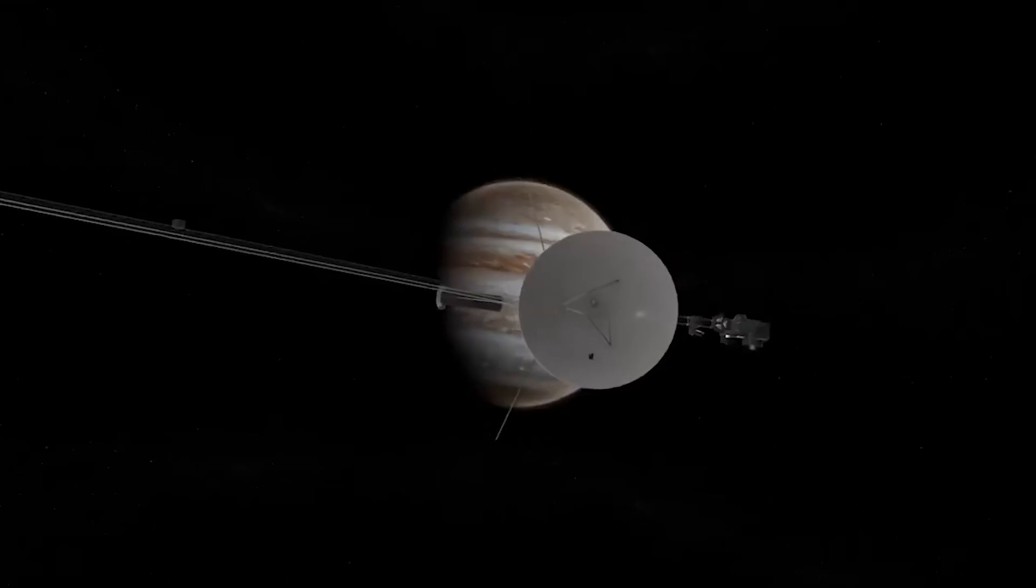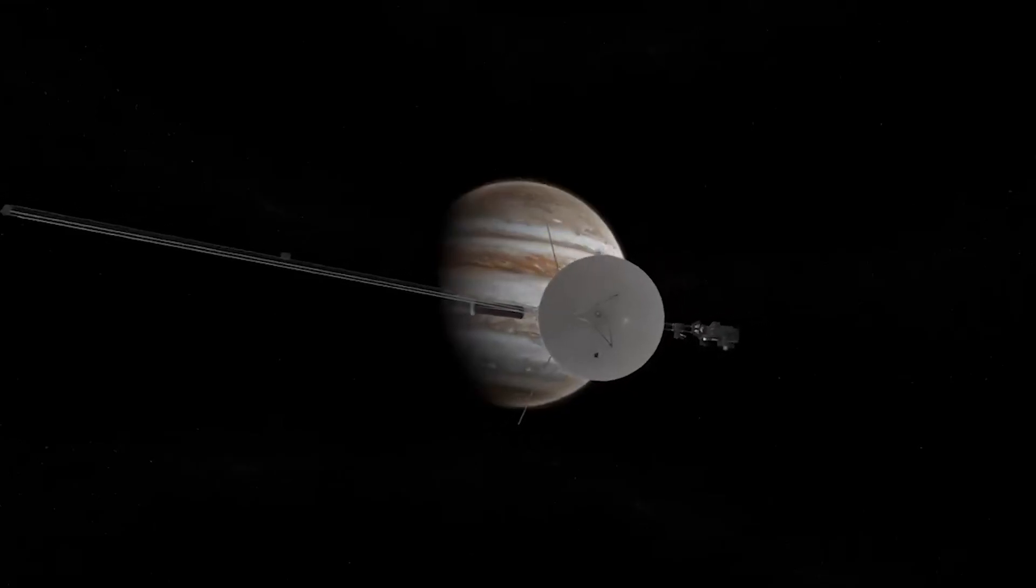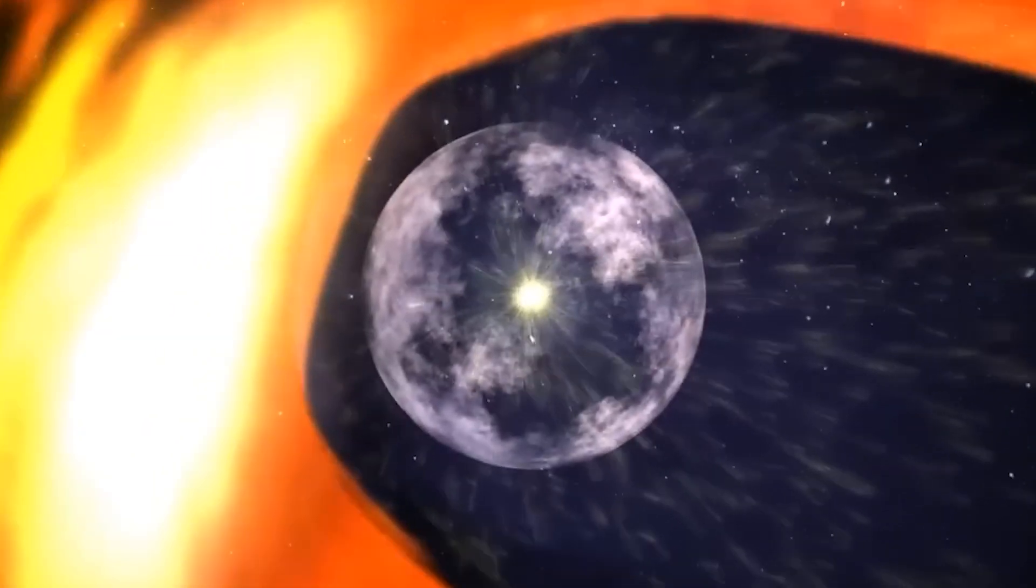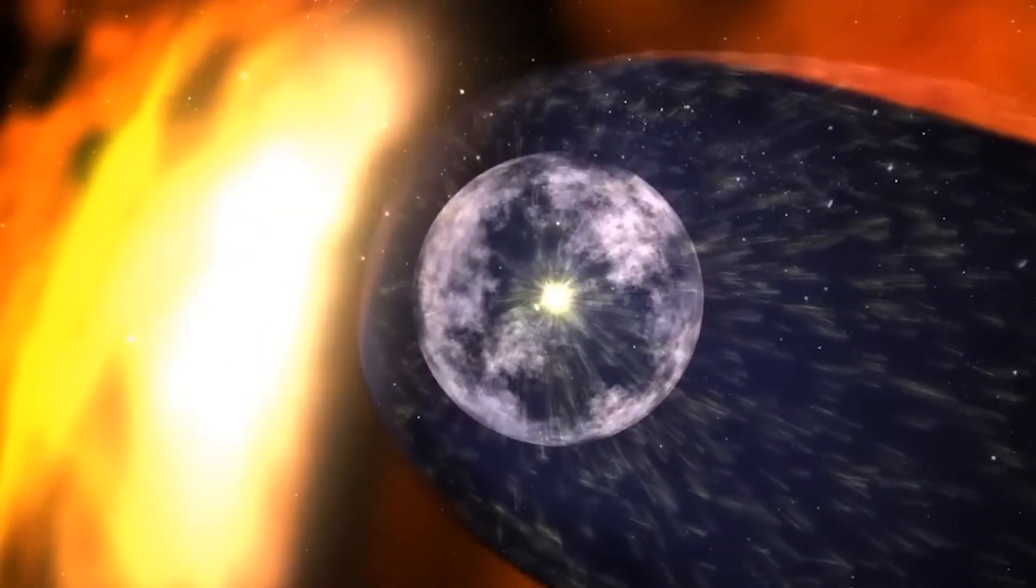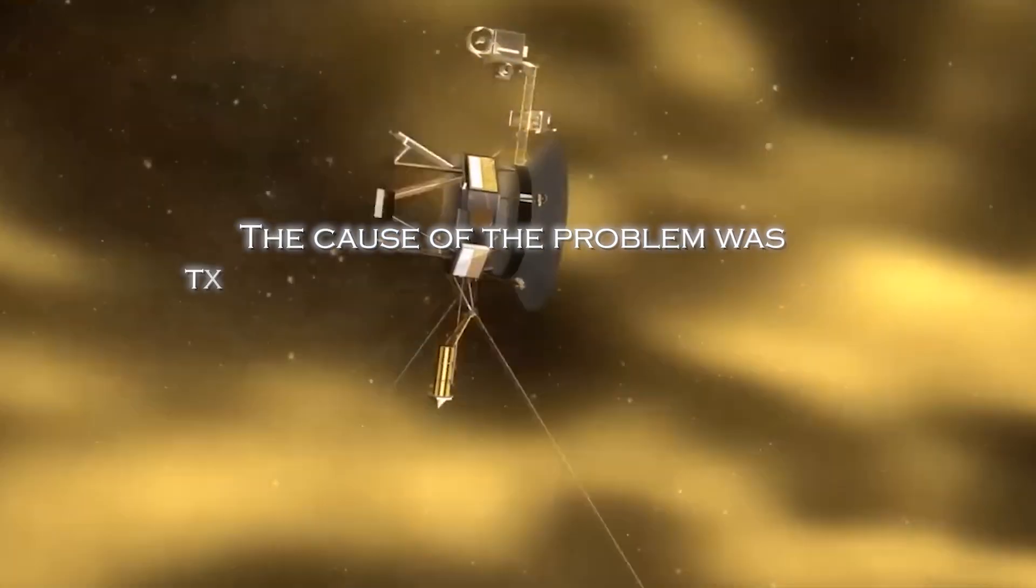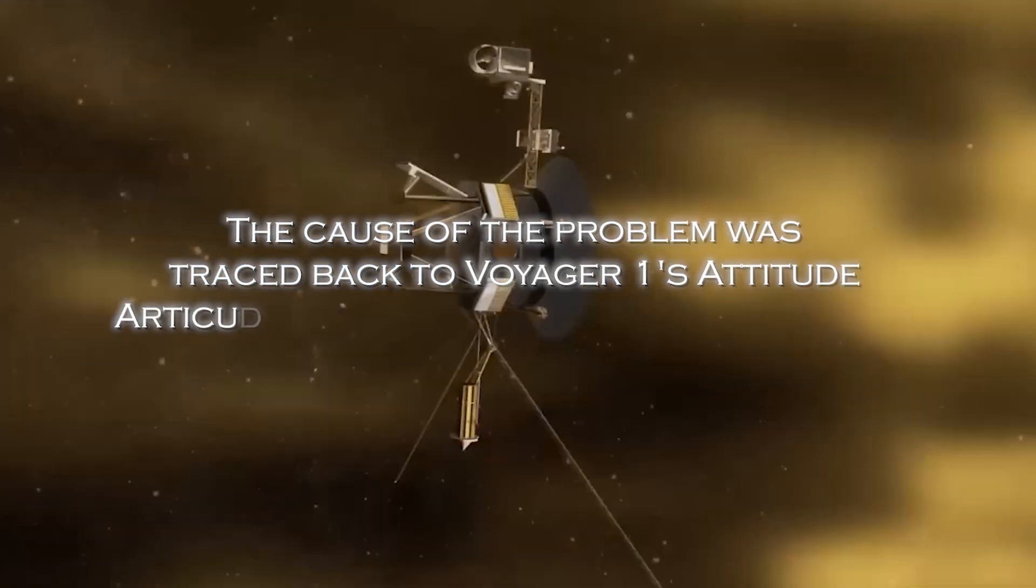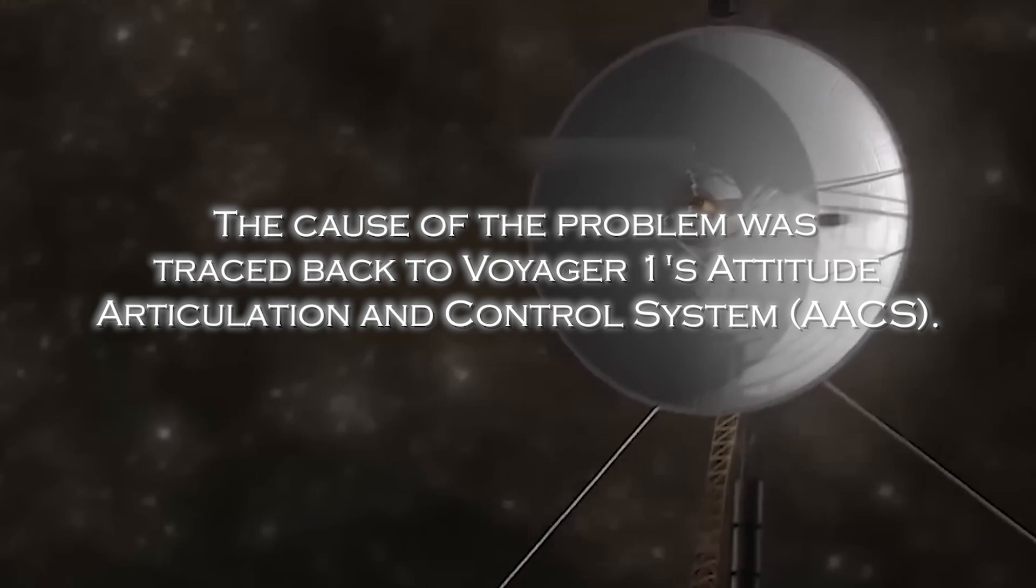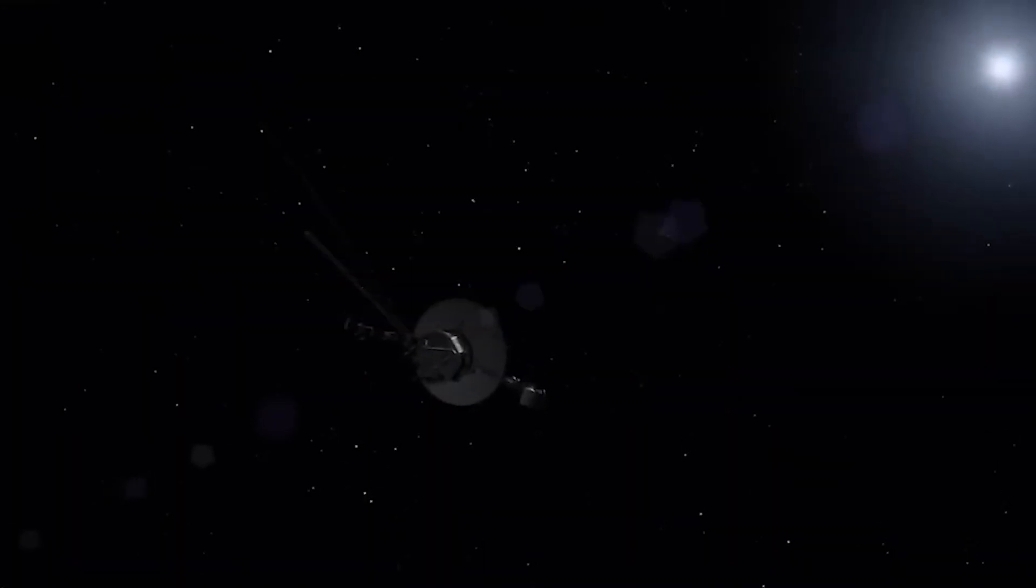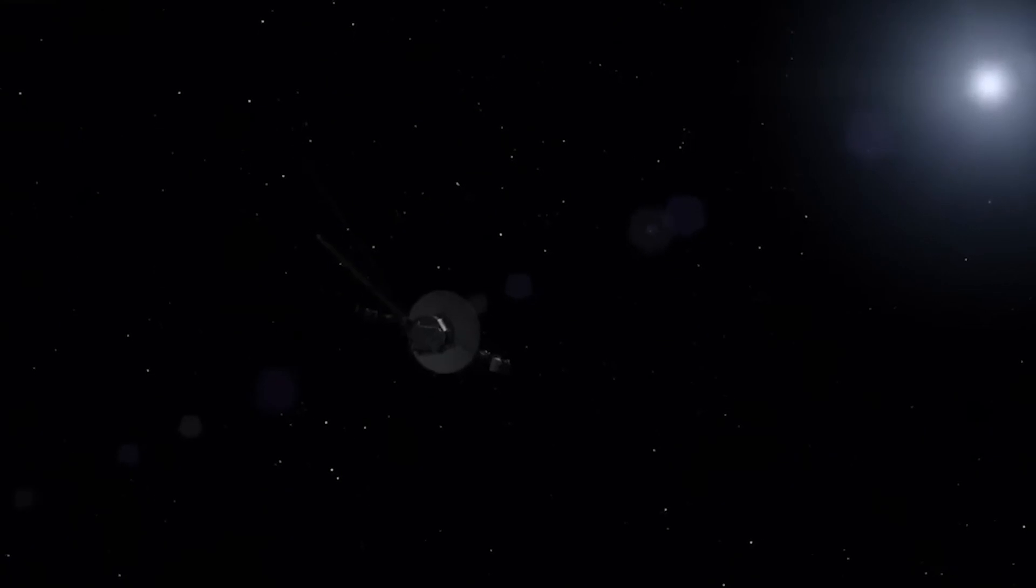After months of receiving encrypted data from the spacecraft, scientists and engineers were finally able to restore clarity and reliability to the information coming from the far reaches of interstellar space. The cause of the problem was traced back to Voyager 1's Attitude Articulation and Control System, or AACS, especially an on-board computer that was supposed to be inactive.